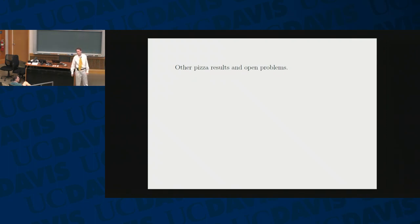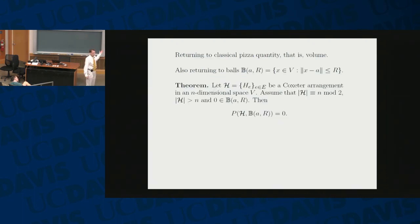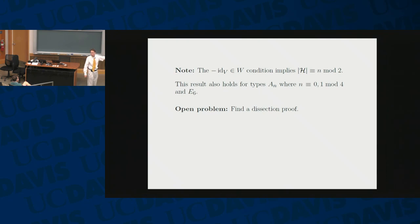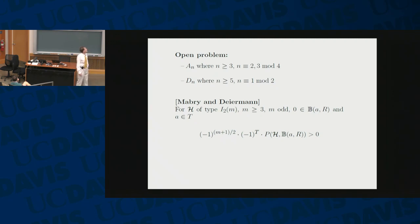Let's talk about some other pizza results. Here is another theorem we are able to prove. We have the condition that the number of hyperplanes in the Coxeter group has the same parity as the dimension we are in. However, it contains calculus. The nice thing is it covers a few more Coxeter arrangements — it covers E6 and type An in dimensions congruent to 0 and 1 mod 4. But can we find the dissection proof? We don't know yet. An in these cases and the odd type D in odd dimensions are the irreducible cases where we need to do more work.